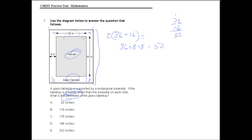We know we have to multiply that by 2 to get this side. So 52 times 2 gives us 104 inches. The perimeter is the sum of all of the sides, so we have 104 inches on these two sides.